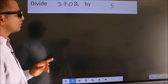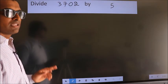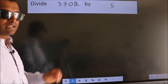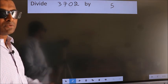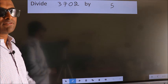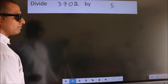Divide 3702 by 5. While doing this division, many do this mistake. What is the mistake that they do? I will let you know. But before that, we should frame it in this way.